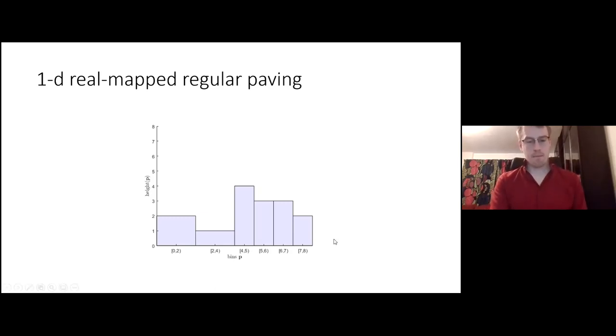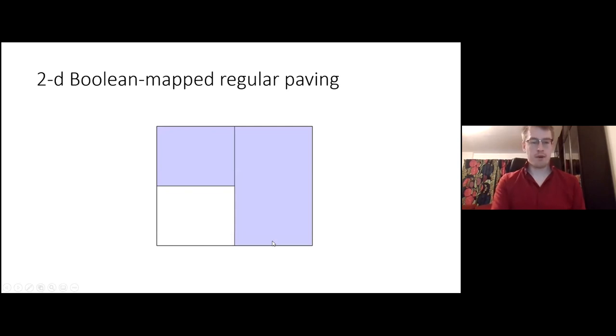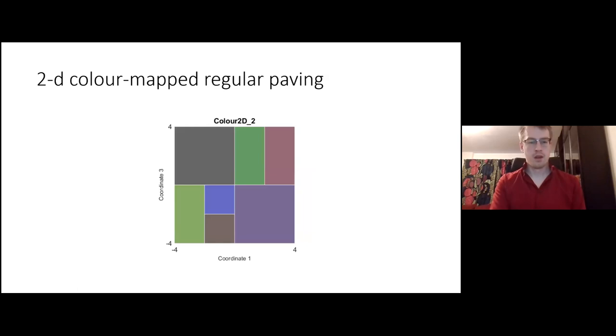Let's see some examples. We can have this real valued mapped regular paving. We see we have made some splits to this interval. We take this sub interval. We see that this is mapped to 2 and this one is mapped to 1 and so on. We can have a 2D boolean mapped regular paving where these values are 1 or 2 or true or false. You can even do color mappings using some RGB color mapping.